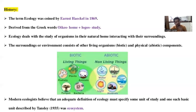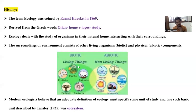Now we study about the abiotic component. What is the meaning of abiotic component? Abiotic components are those which are non-living. Biotic means living; abiotic means non-living. Which are the non-living components? Soil, air, water, sunlight, minerals — these are the abiotic components.